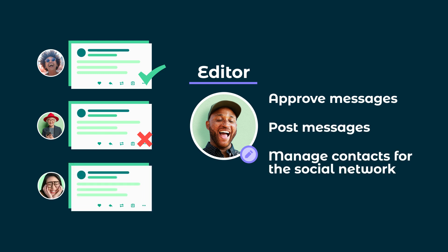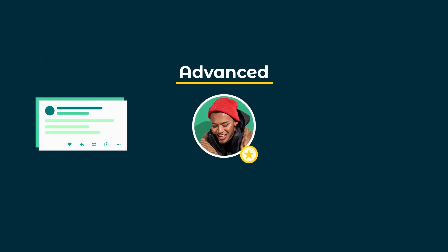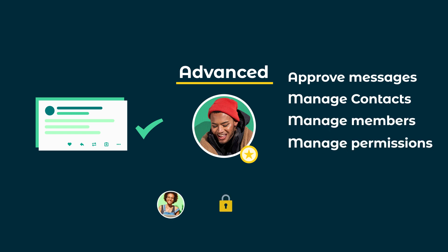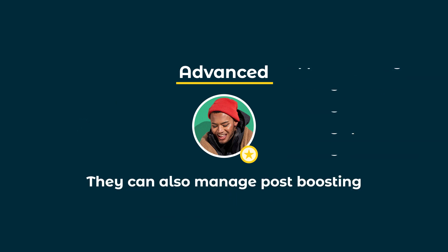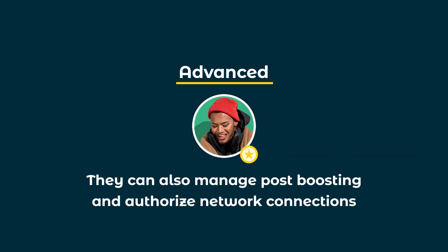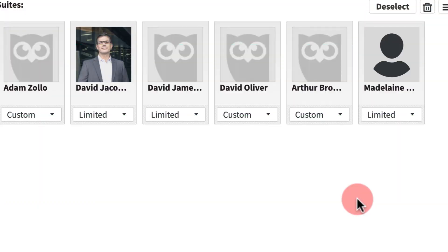Advanced permissions give a user the power to approve messages and manage contacts, as well as manage member permissions and RSS feeds for the network. They can also manage post boosting and reauthorize network connections.